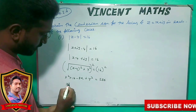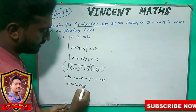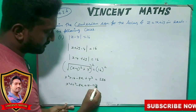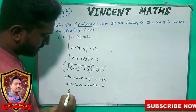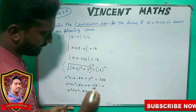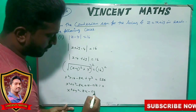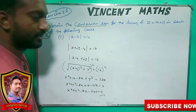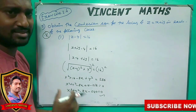x squared plus y squared minus 8x plus 16 minus 256 equal to 0. Then x squared plus y squared minus 8x minus 240 equal to 0. Cartesian format is very easy.